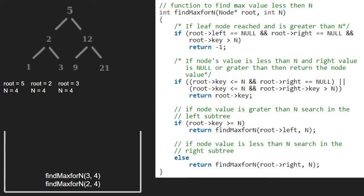Now, 3 is a leaf node but 3 is not greater than 4, so the first if statement is not satisfied. The second if statement is satisfied as 3 is less than 4 and 3's right is null. Hence, we return 3, which is the output.